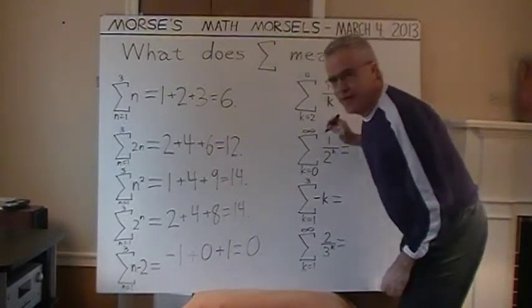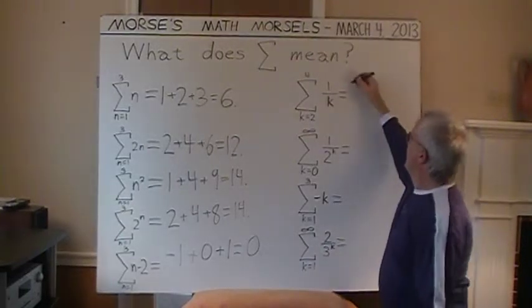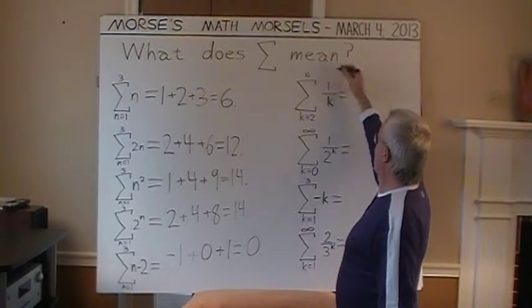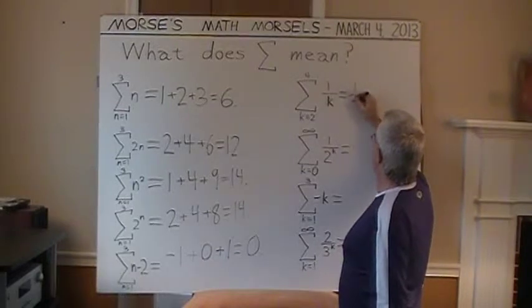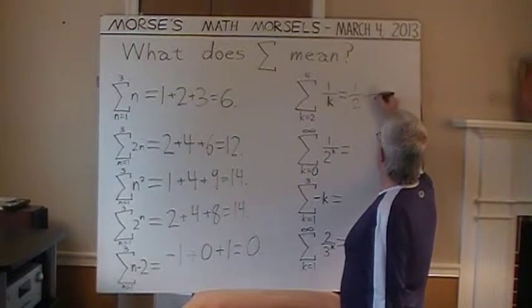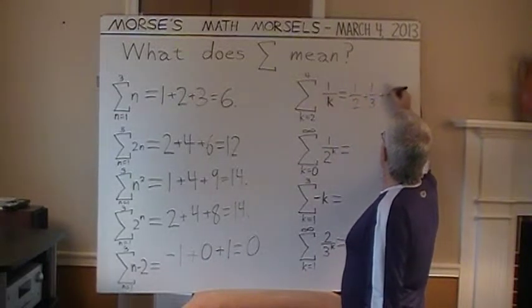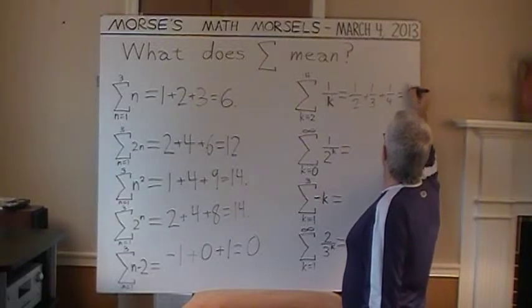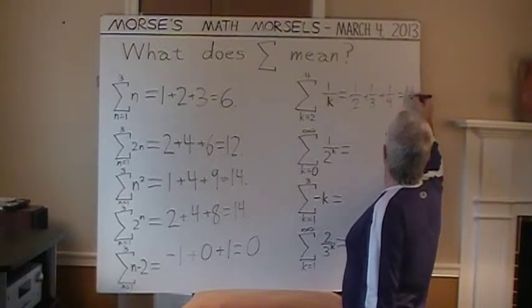1 over K. Just 1 divided by K. Well, K equals 2 through 4. So K is going to take on the values 2, 3, 4. Now we're just adding the fractions. 1 half, 1 third, 1 fourth, and that comes out to 1 and 1 twelfth.